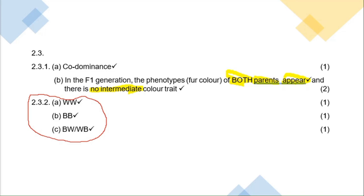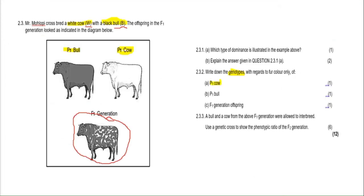Question 2.3.3 says: a bull and a cow from the F1 generation are crossed — you must use a genetic cross to show the phenotypic ratio of the F2 generation. I want to highlight the word 'phenotypic.' When you see 'genotypic,' think genes and letters. When you see 'phenotypic,' it means physical — what you physically see. For phenotypic, you need to state how many of the offspring will be white, black, or black and white.